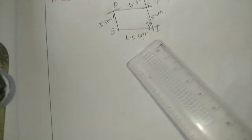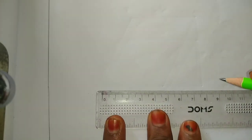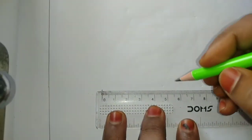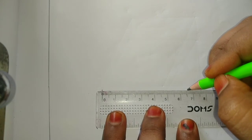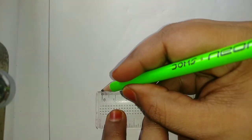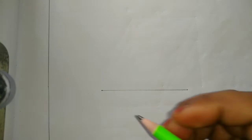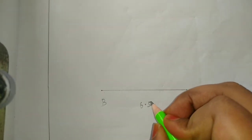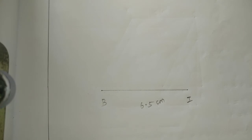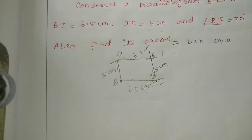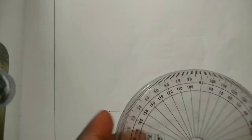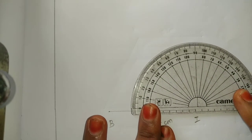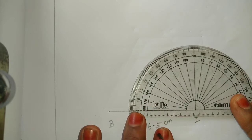First step: draw BI = 6.5 cm. Take scale, pencil and draw one line of 6.5 cm. Second step: at I, mark angle BIR = 70 degrees. Place the protractor correctly at B, align the base line, and mark 70 degrees.